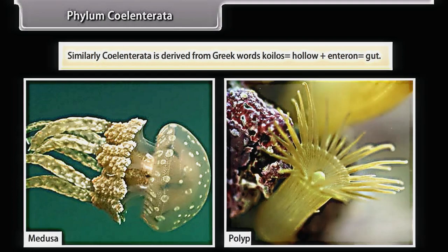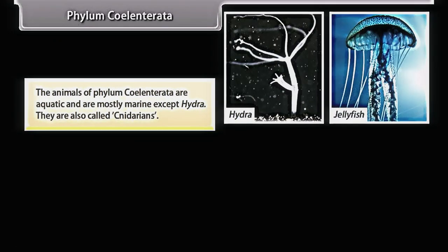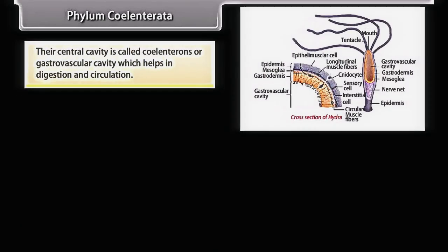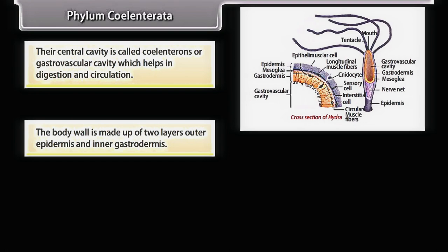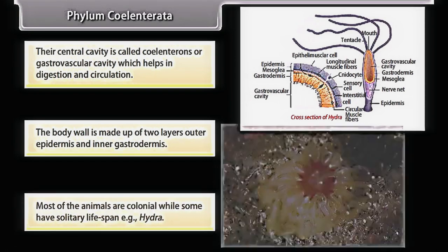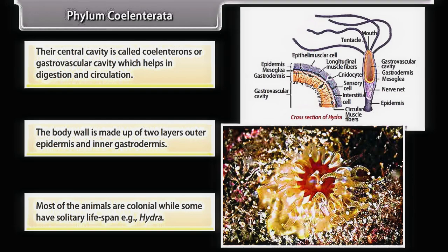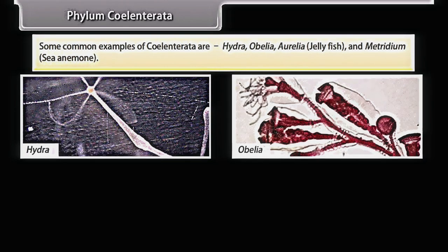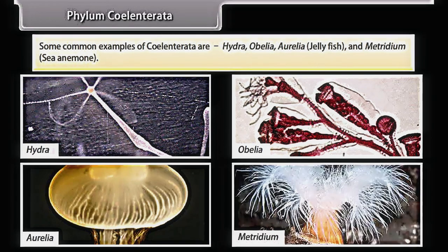Coelentrata is derived from Greek words 'koelos' (hollow) and 'enteron' (gut). The animals of Phylum Coelentrata are aquatic and mostly marine except Hydra; they are also called cnidarians. They are multicellular, diploblastic, and radially symmetrical. Their central cavity is called coelenteron or gastrovascular cavity, which helps in digestion and circulation. The body wall has two layers: outer epidermis and inner gastrodermis. Most are colonial while some, like Hydra, have a solitary lifespan. Common examples are Hydra, Obelia, Aurelia (jellyfish), and Metridium (sea anemone).